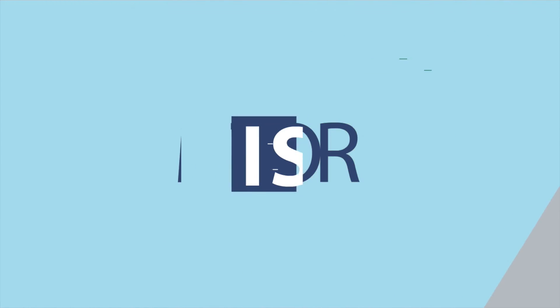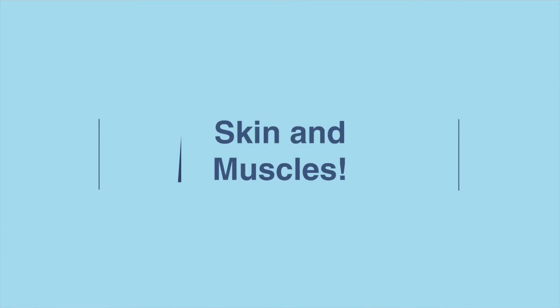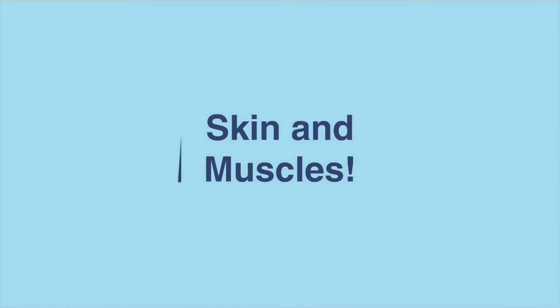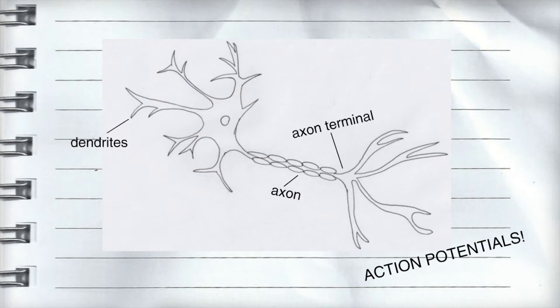Motor neurons carry information from the central nervous system to the outer parts of our bodies, like our skin and muscles. So let's break it down a little more.